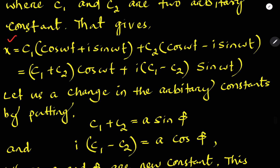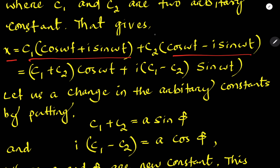The solution becomes x equal to c1 times (cos omega t plus i sine omega t) plus c2 times (cos omega t minus i sine omega t). This uses Euler's formula: e to the power i omega t equals cos omega t plus i sine omega t, and e to the power minus i omega t equals cos omega t minus i sine omega t.